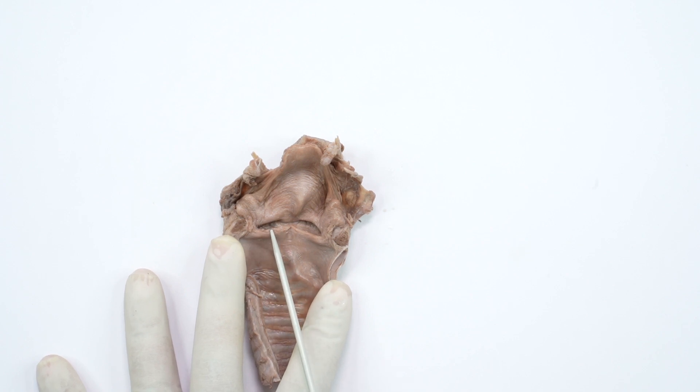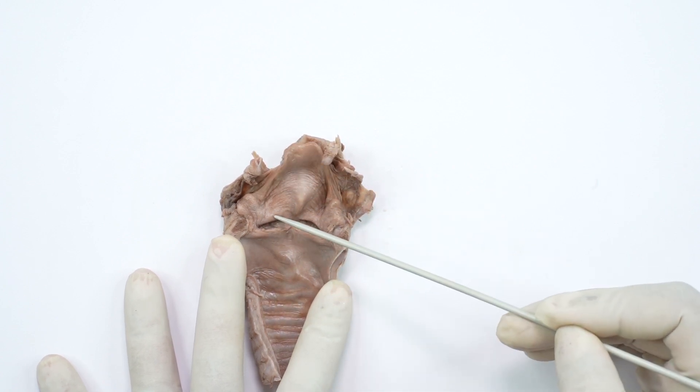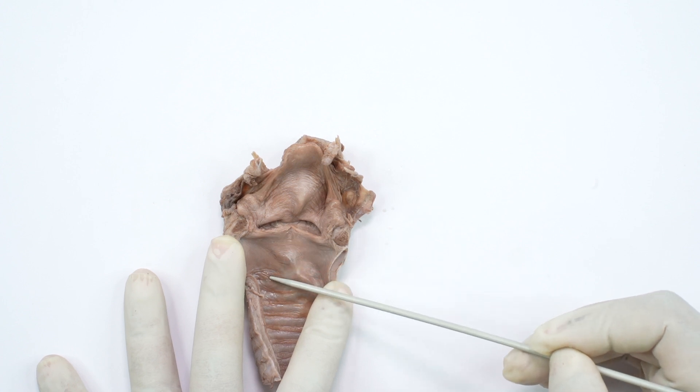These two pairs of folds will divide the laryngeal cavity into a supraglottic part, glottic part and infraglottic part.